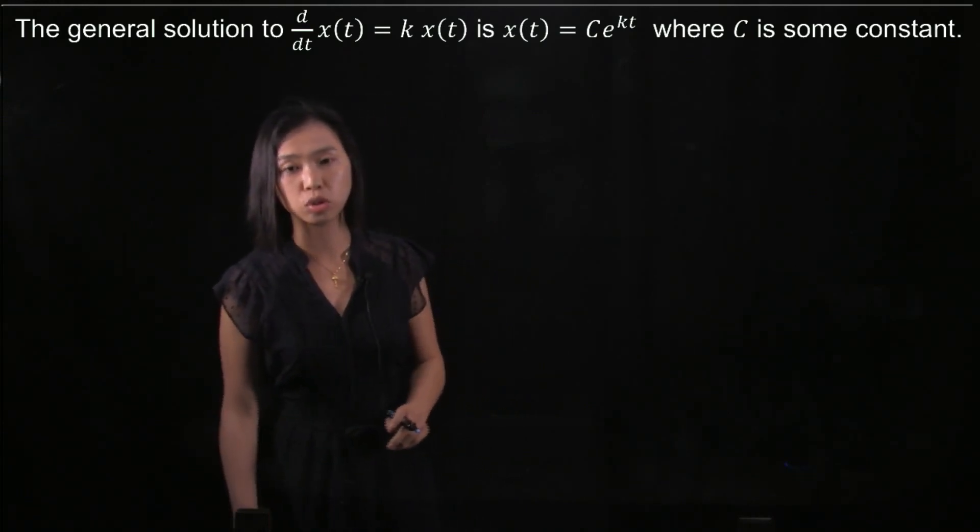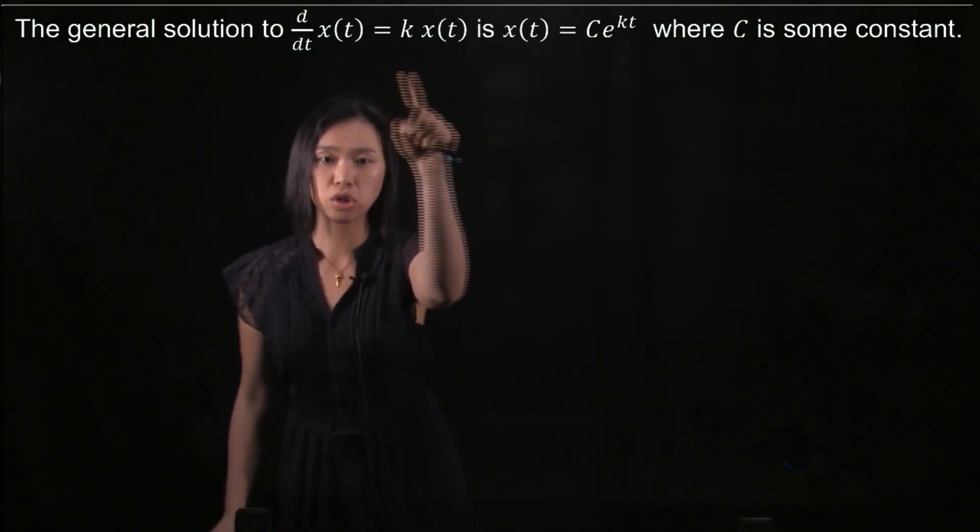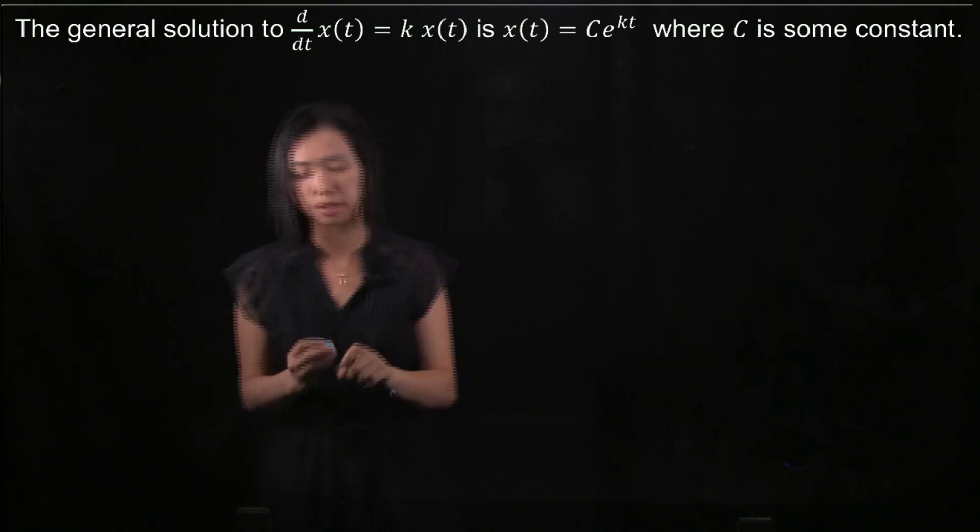We would like to prove that the general solution to this differential equation is x(t) = Ce^(kt), where C is some constant.